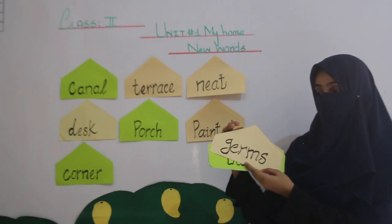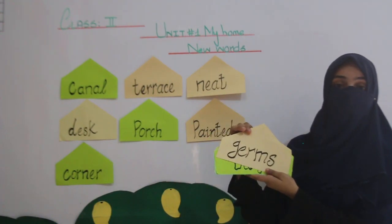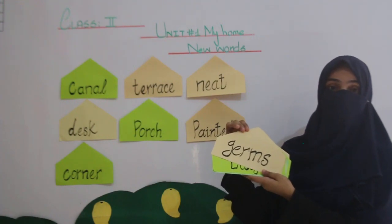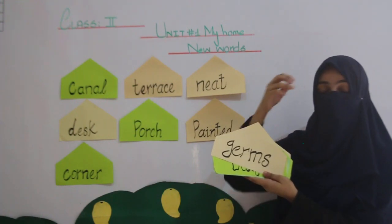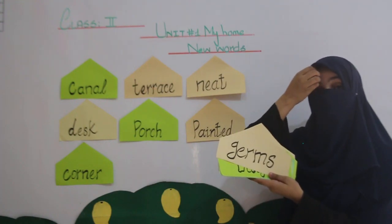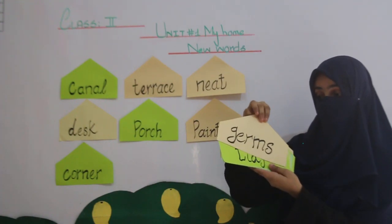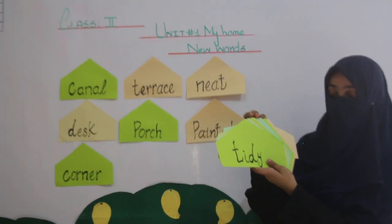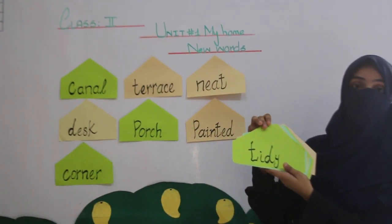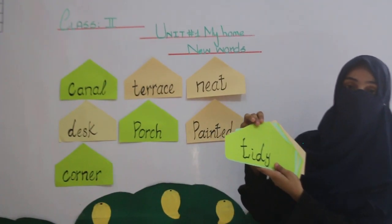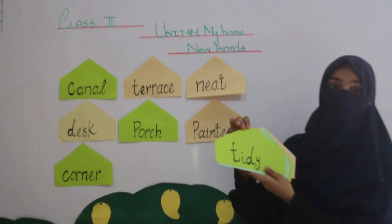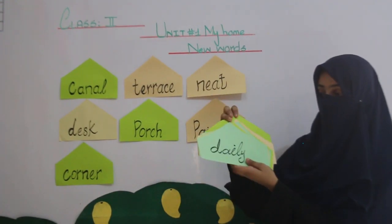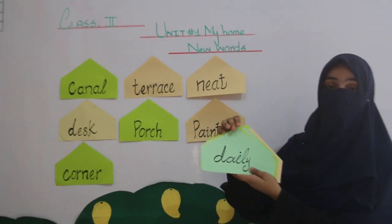The next word is Germs. G-E-R-M-S, Germs — Jerasim. Another word is Tidy. T-I-D-Y — Saaf Sutra ke hi sense mein is ko use kiya jata hai.